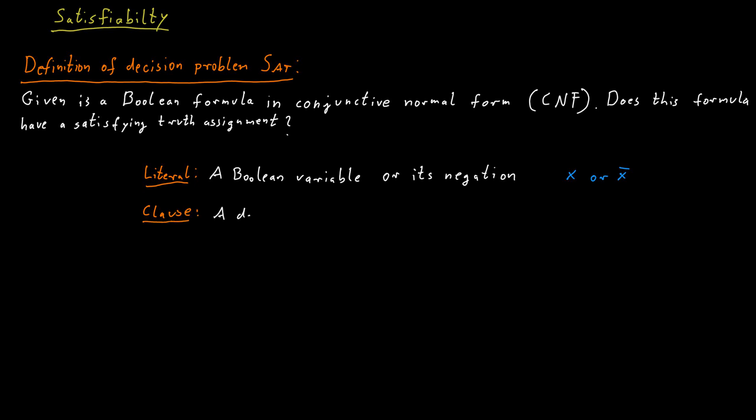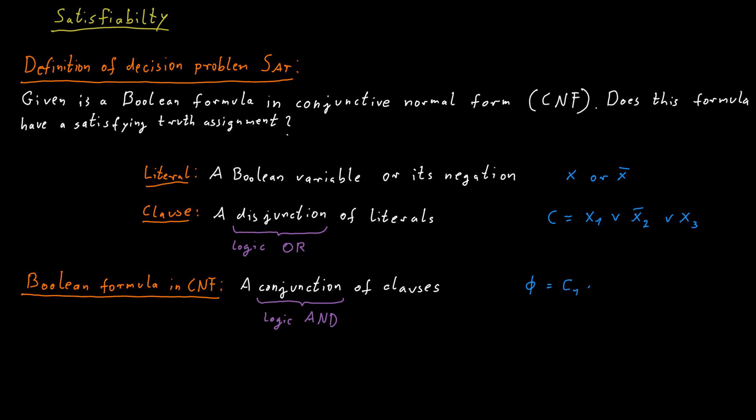We then have clauses in the formula. Each clause contains a number of literals which are connected by a logic or operation. So we have something like x1 or not x2 or x3. So that would be one example of a clause. And then the Boolean formula is composed of such clauses which are connected together by logical and operations. So we say the formula is true if all of the clauses are true. This is what conjunctive normal form means. It's a conjunction of disjunctions of literals.